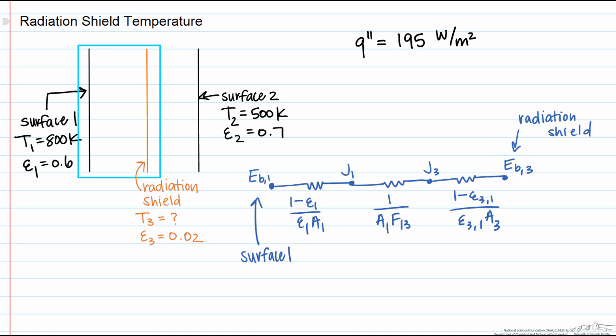So note we go from surface one here acting as a black body to surface three, which we're going to call the radiation shield. And then we have resistances based on the emissivity of surface one, the view factor between the two surfaces, which is equal to one, and the resistance due to the emissivity of the first side of the radiation shield.